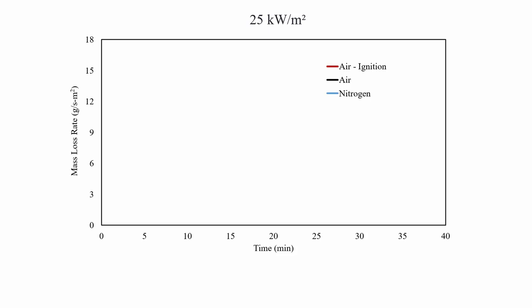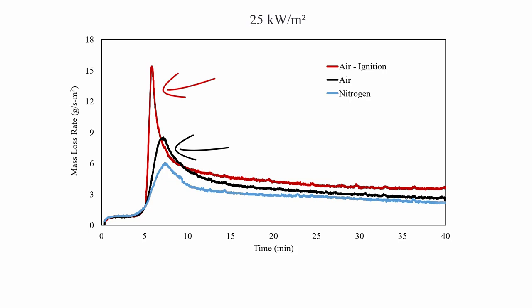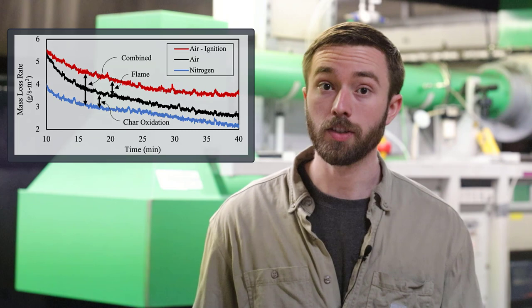Now let's take a look at one of the lower heat fluxes that required piloted ignition. This figure shows the results of experiments conducted at 25 kilowatts per meter squared, showing the mass loss rate behavior for cases in air with a pilot, in air without a pilot, and in nitrogen. There's a distinction between experiments conducted in nitrogen and those conducted in air without a pilot — the difference between these conditions is the contribution of char oxidation. The difference in mass loss rate response between the two air conditions, one with a pilot and one without, is due to flame heat feedback since there's the presence of a flame sheet in the case in which ignition occurred.